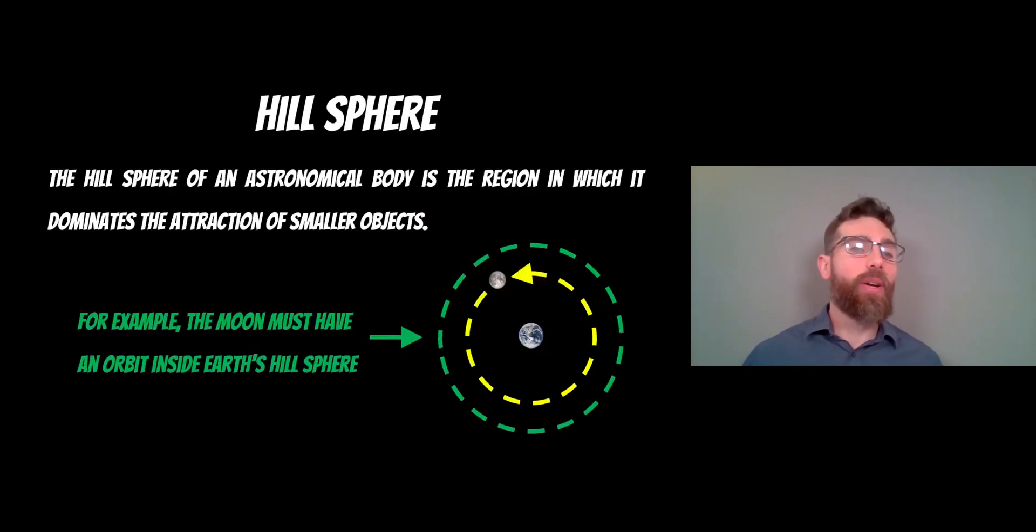So what is the hill radius or the hill sphere? Well it's a distance or a sphere around an astronomical object in which it would gravitationally dominate the attraction of smaller objects.